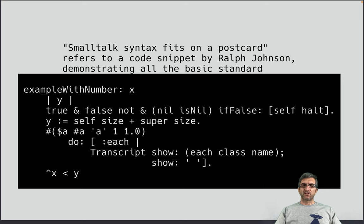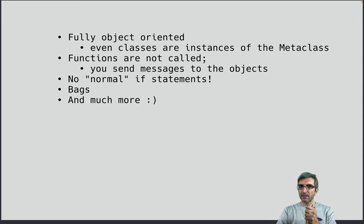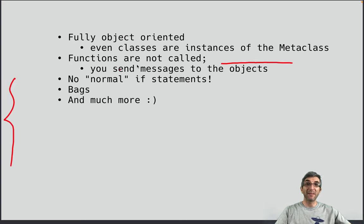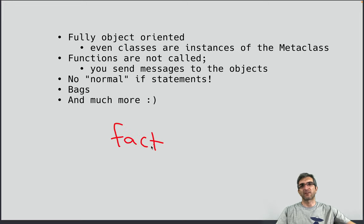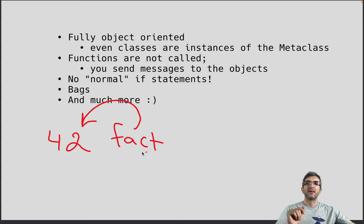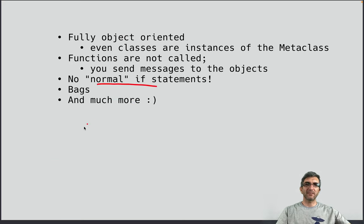Smalltalk syntax fits on a postcard. It's fully object-oriented — even classes are instances of a metaclass. Functions are not called; you send messages to objects. Messages are super important in understanding Smalltalk. For example, if you have a function called 'fact' for factorial and you want to use it, you write '42 fact' — you send the message 'fact' to your object 42.